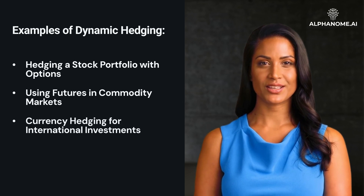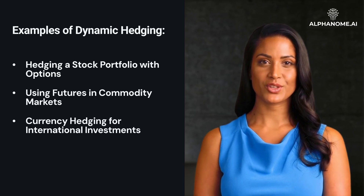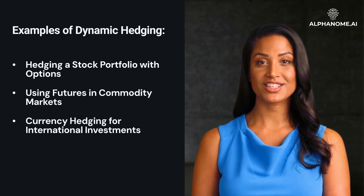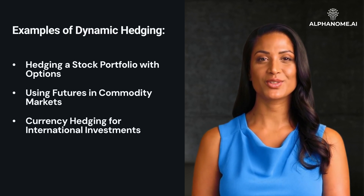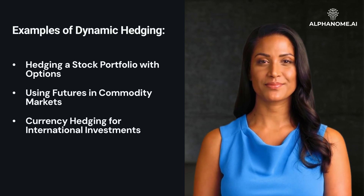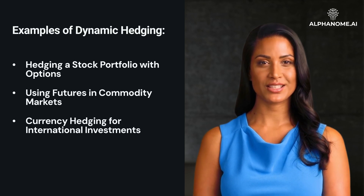Example 3: Currency hedging for international investments. Situation: an investor has a portfolio of international stocks. Strategy: to hedge against currency risk, the investor uses currency forwards or options. Adjustment: as exchange rates fluctuate, the investor adjusts their currency hedging positions accordingly.